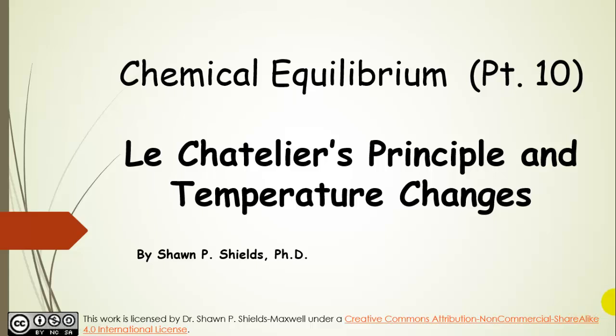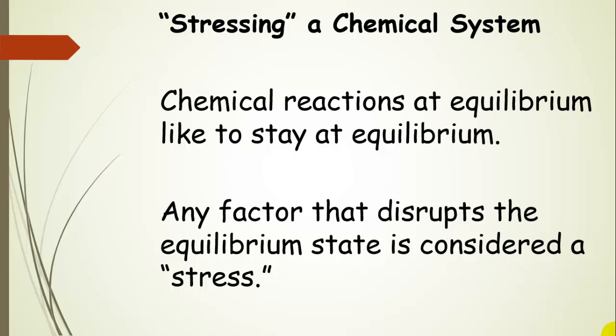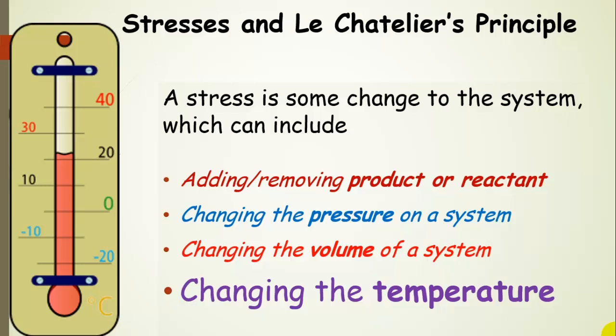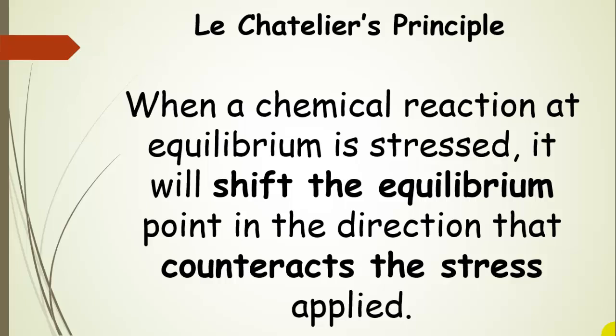Chemical Equilibrium Part 10: Le Chatelier's Principle and Temperature Changes. This is the last part of our discussion about Le Chatelier's Principle and stressing a chemical system. Chemical reactions that are already at equilibrium like to stay at equilibrium, so any factor that disrupts this is considered a stress. In the previous two videos, we talked about adding and removing product or reactant, and about pressure-volume changes. The last stress we need to discuss is changing the temperature. If a chemical reaction at equilibrium is stressed, the equilibrium will shift in the direction that counteracts the stress applied.